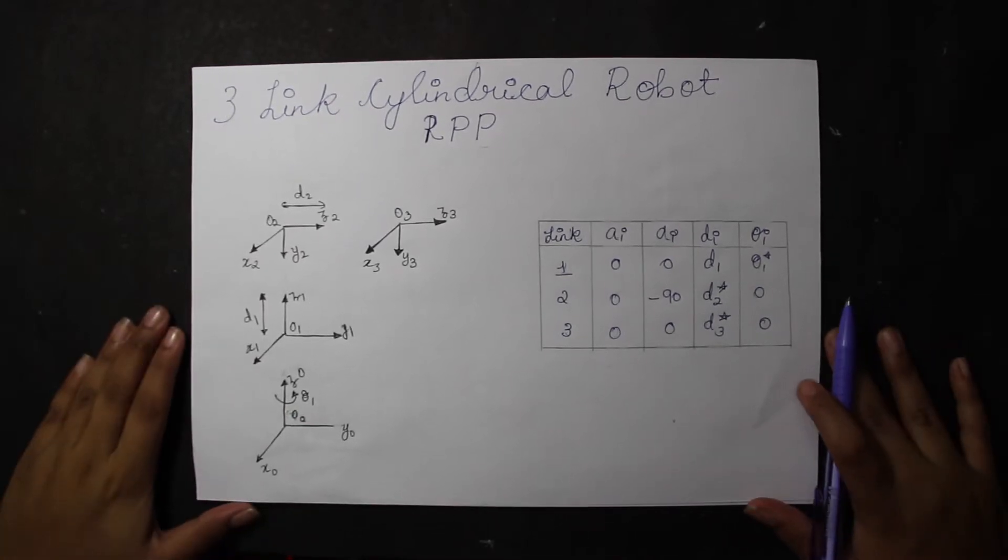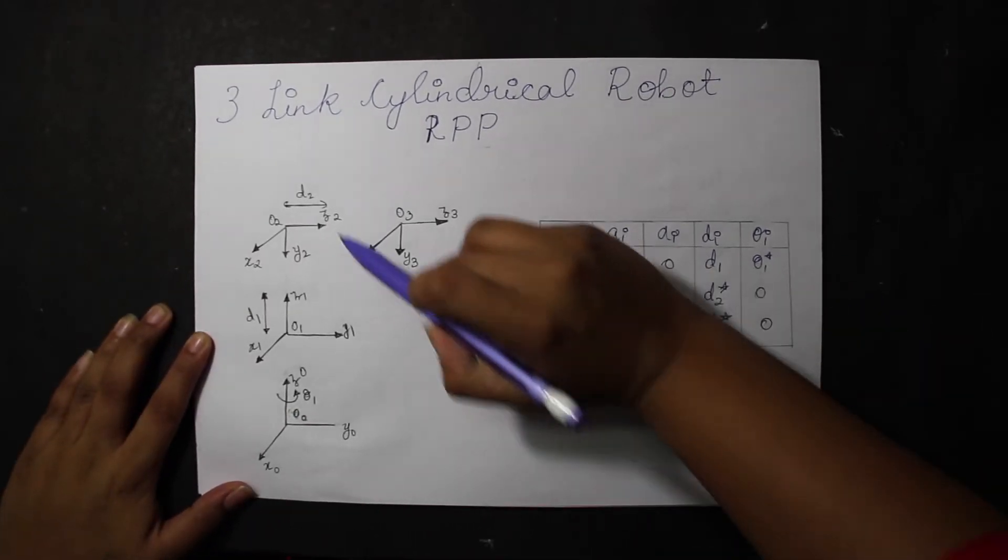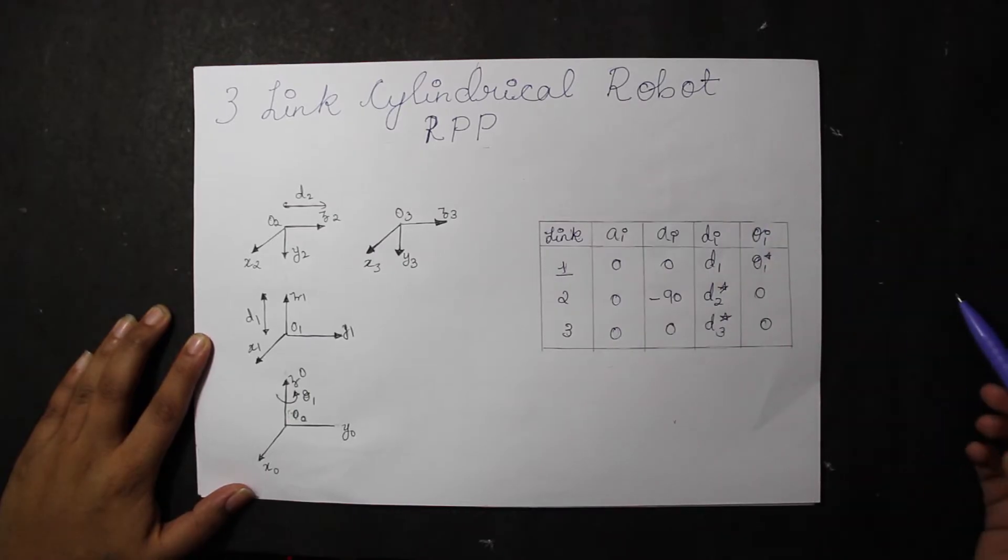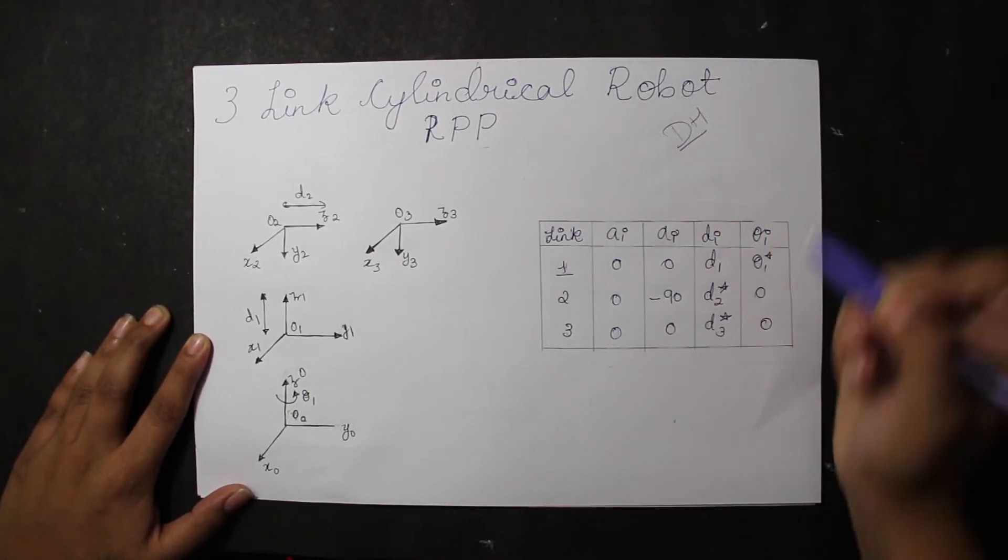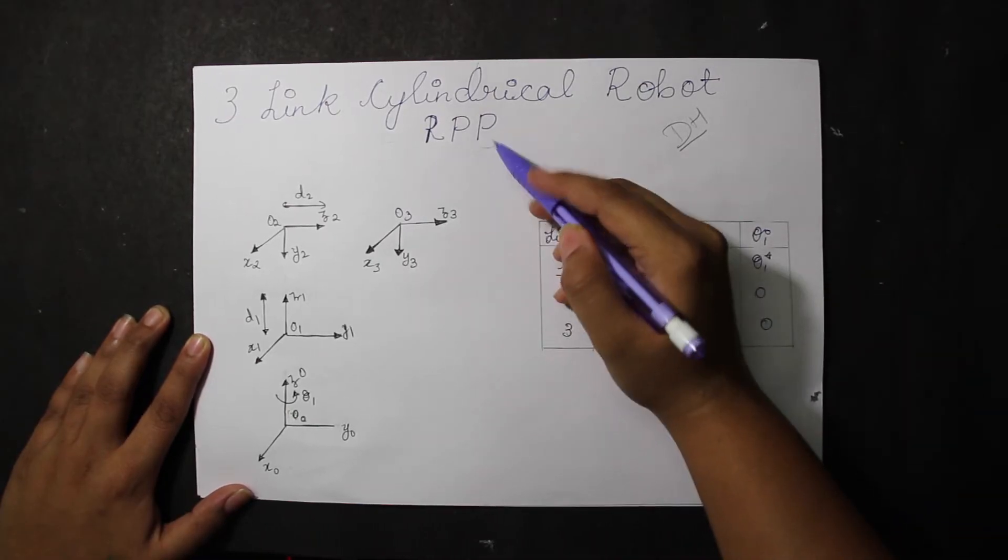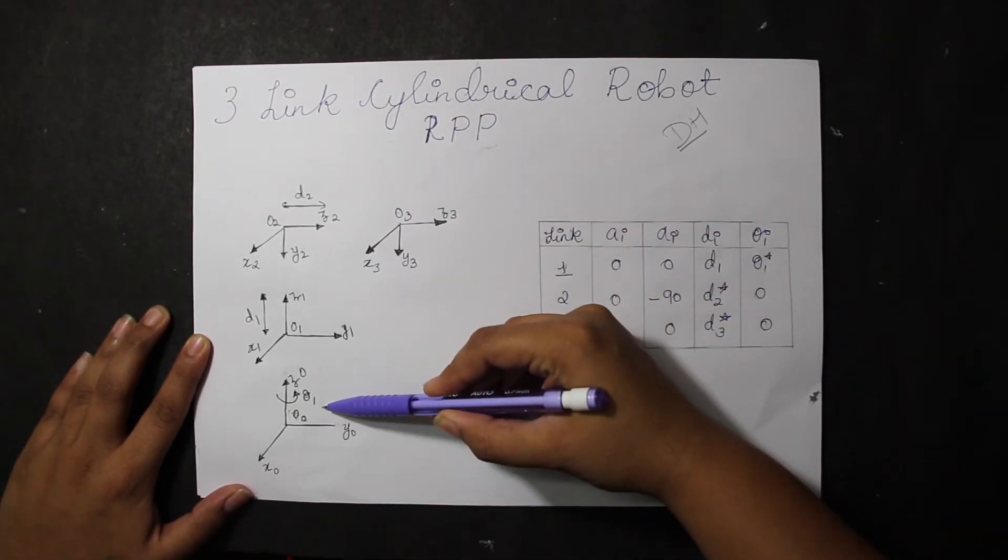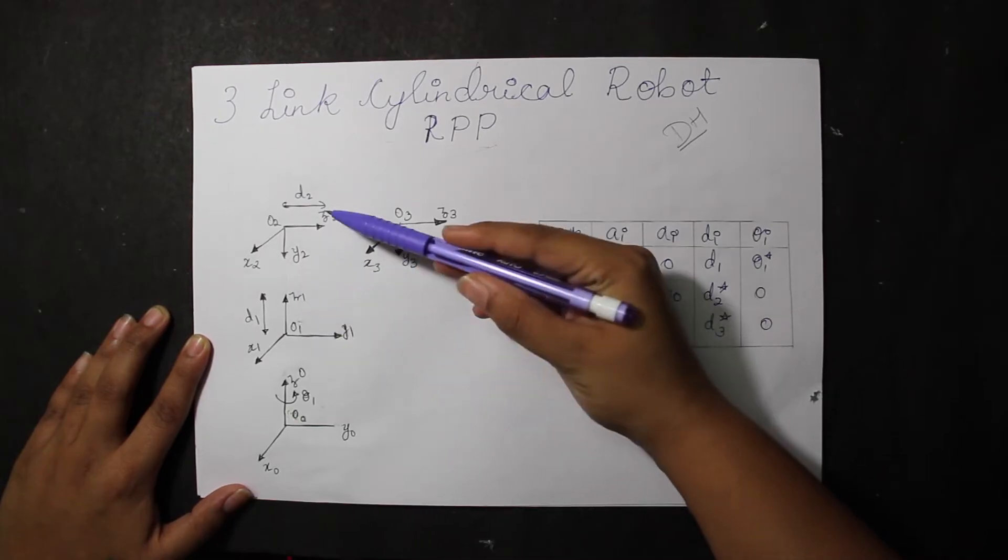Hello guys, today we'll be looking at a three-link cylindrical robot. We'll be using DH convention to find out the forward kinematics of an RPP robot - that is, rotation in one axis, prismatic joint in another, and another prismatic joint.